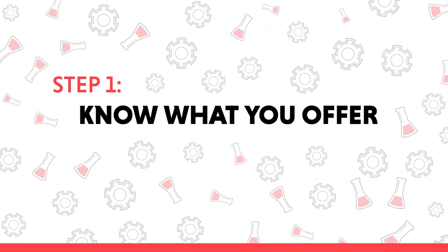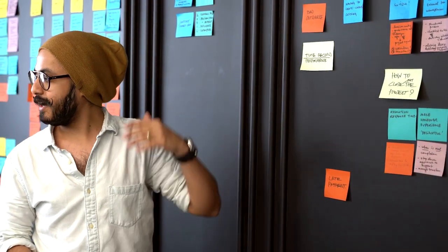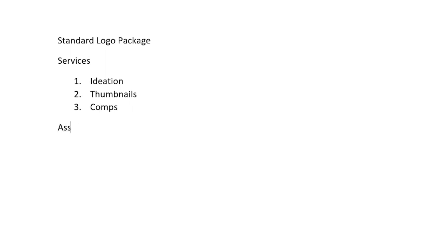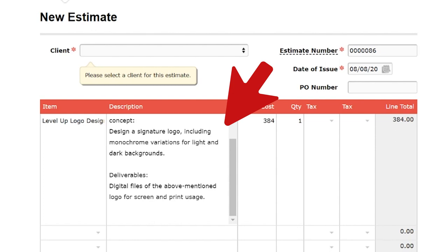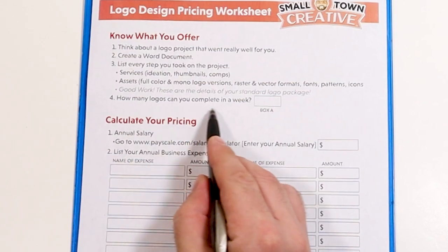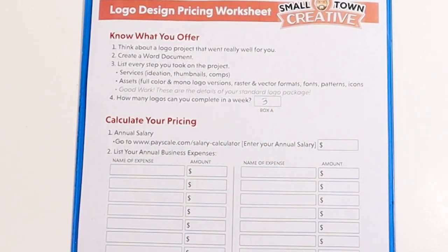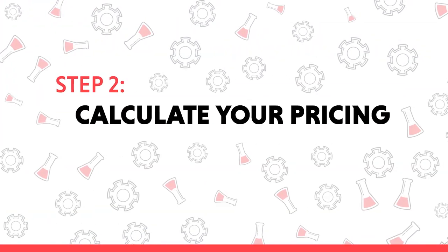Without further delay, let's look at the three steps to figuring out your fixed rate. Step number one is knowing what you offer. I'm assuming that you've created logo designs for clients before. Think about a logo project that went really well for you. Create a blank Word document and make a list of each and every step you took on the project. Think of the services you provided like ideation, thumbnails, and comps. Also consider the different digital assets you provided — maybe full-color and monochrome versions of the logo in both raster and vector formats. Let's consider all those things your standard logo package. Consider how many of these logo packages you can complete in a week's time. For our example, let's say we can do three logos every week, and move on to the next step to calculate the pricing.